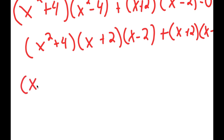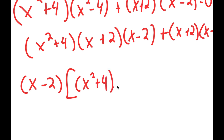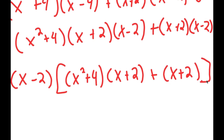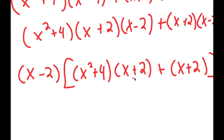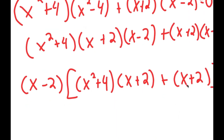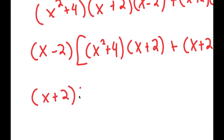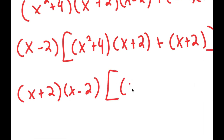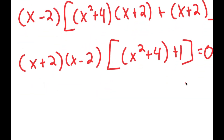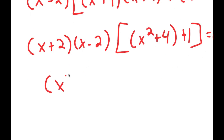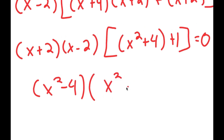So I get x squared plus 4 times x plus 2 times x minus 2, plus x plus 2 times x minus 2, which equals 0. I'm going to factor out x minus 2, giving x minus 2 times x squared plus 4 times x plus 2 plus x plus 2. Then factoring out x plus 2 as well, I get x plus 2 times x minus 2 times x squared plus 4 plus 1 is equal to 0. So x plus 2 times x minus 2 is x squared minus 4, and I have this times x squared plus 5 equals 0.